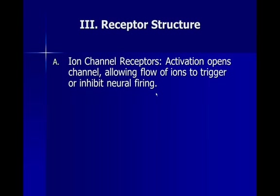Now, to understand how these receptors work, we have to understand a little about receptor structures — we're going to revisit this when we talk about neurotransmitters. The first is called an ion channel receptor, in which activation opens up a channel allowing the flow of ions across a cell membrane. The way our brains work is through generating electrical activity by opening and closing ion channels. There are ions on each side of the membrane that generate an electrical charge — much like a battery. An ion channel receptor opens and allows those ions to trigger neural firing or inhibit neural firing, depending on the kind of neurotransmitter it is.